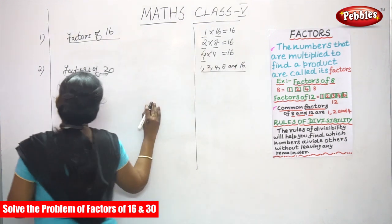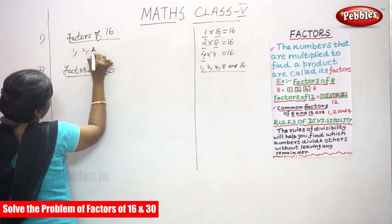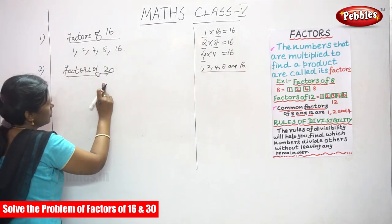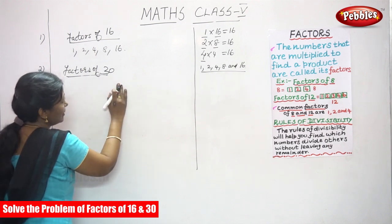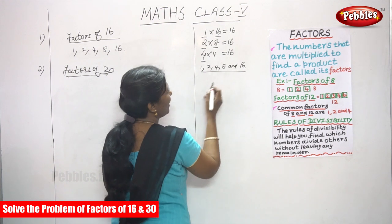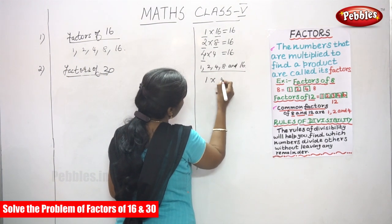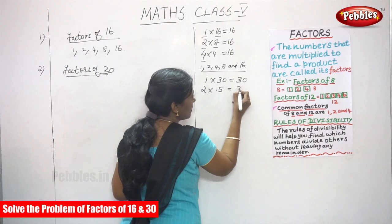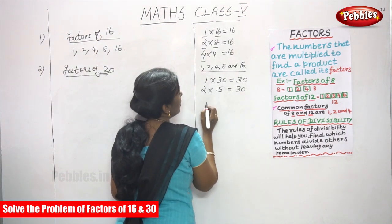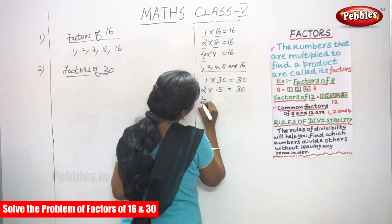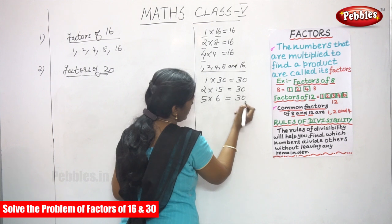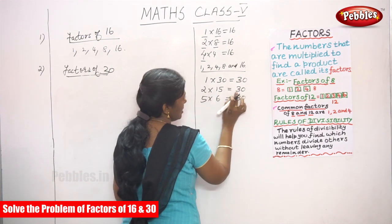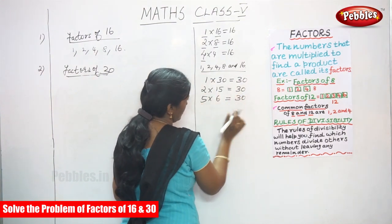So the factors of 16 are 1, 2, 4, 8, and 16. Next, we will find the factors of 30. We have to write the multiplication table, and with the help of the multiplication table we will find the factors of 30. So 1 into 30 is equal to 30, 2 into 15 is equal to 30, and 5 into 6 you can get 30.